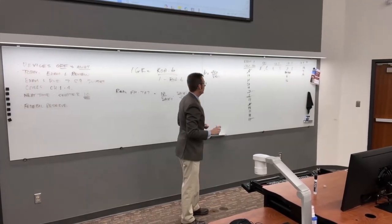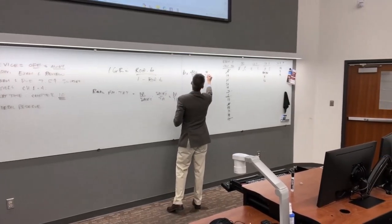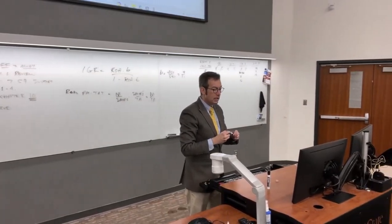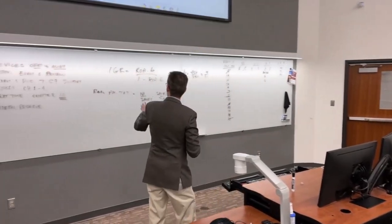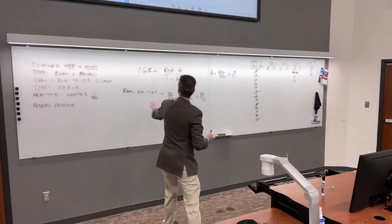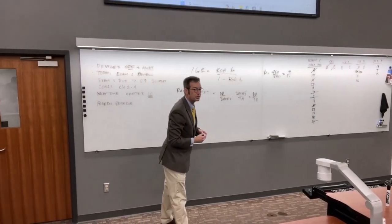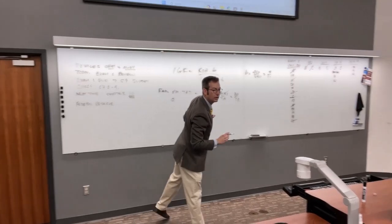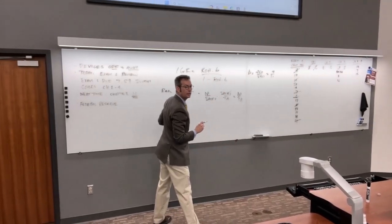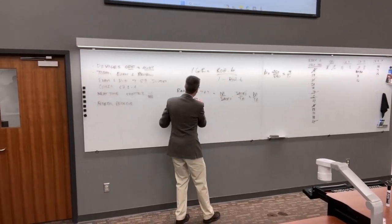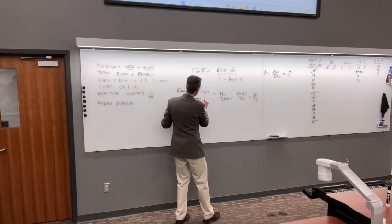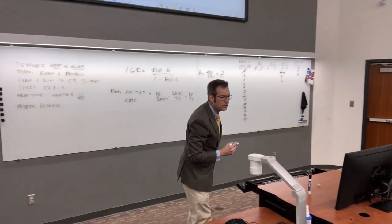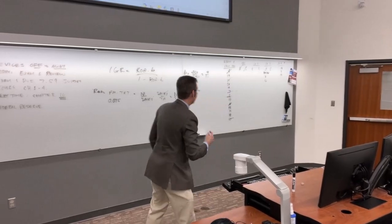ROA times B equals 0.075 times 1.5 times (450/550). Profit margin is 0.075 and total asset turnover is 1.5.